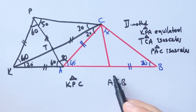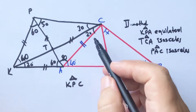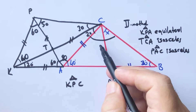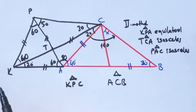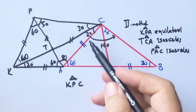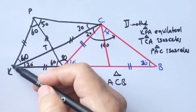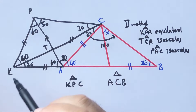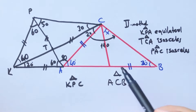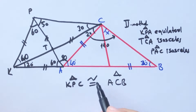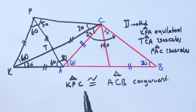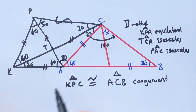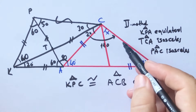— are congruent, because they have the same angles. Here is 110 degrees and this angle is also 110 degrees, which means these two triangles are congruent. We know that if two triangles are congruent, the lengths opposite the same angles are equal.